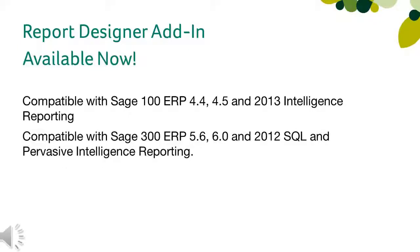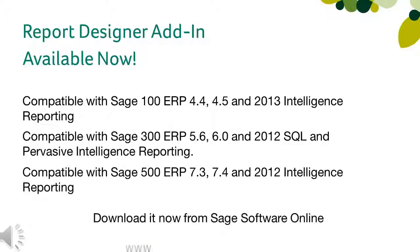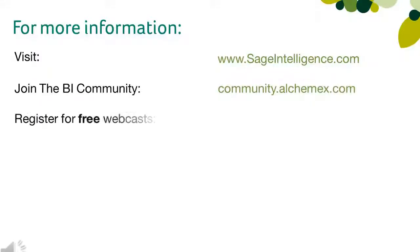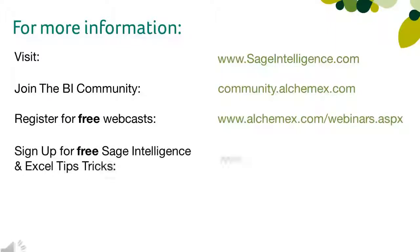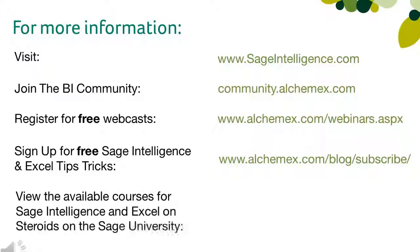The Report Designer add-in is available now as a separate download for SAGE 100, 300, and 500 ERP Intelligence Reporting, and can be accessed from SAGE Software Online. For more information on Intelligence Reporting, please visit sageintelligence.com. Join the relevant SAGE ERP group on the BI community, register for free webcasts, sign up for SAGE Intelligence and Excel tips and tricks, and view the SAGE Intelligence and Excel on Steroids courses available on the SAGE University.